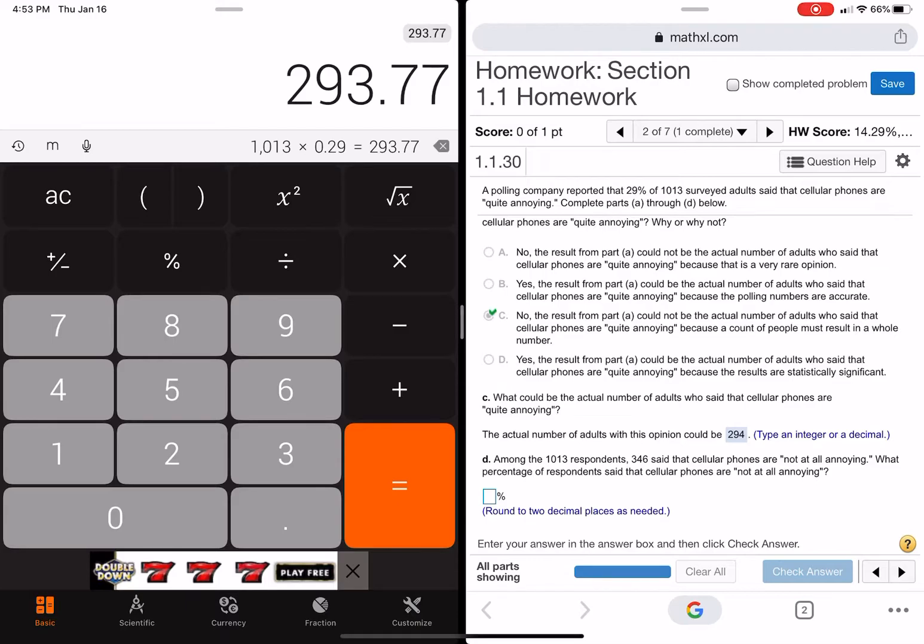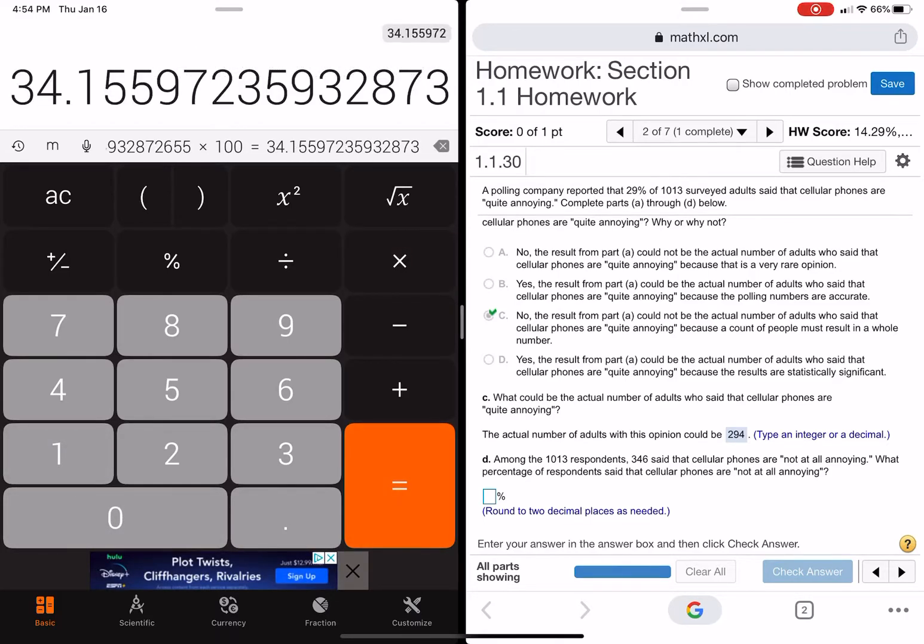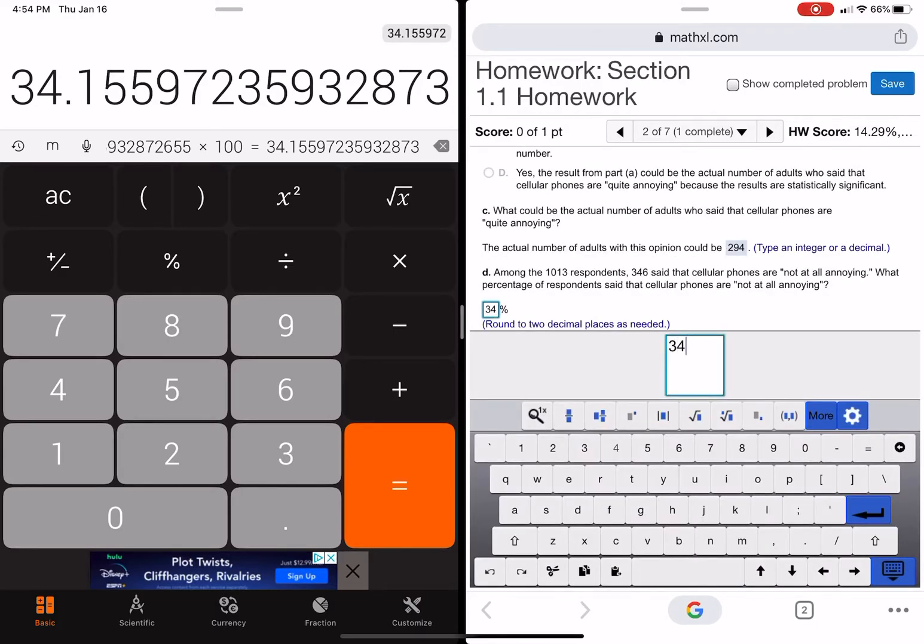If you work backwards on this problem, you're going to put the successes which is the 346 and you're going to divide that by the 1,013. Since it said percent, we need to multiply this thing by 100, so it's 34 point... and it says two decimal places so that would be 16. The way that I'm doing that is I look at the third digit, so 34.155, you go to the third number which is 5 and that would round the second 5 to a 6.